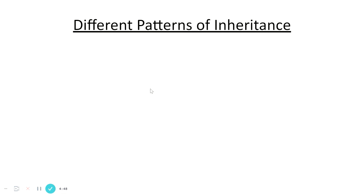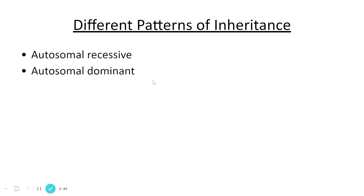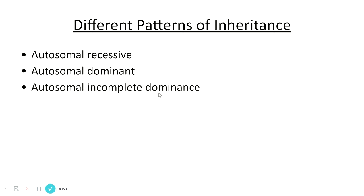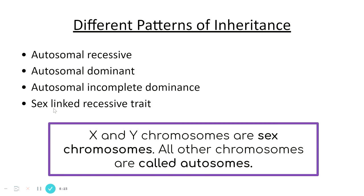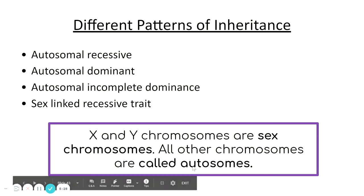There are different patterns of inheritance we need to know at Higher level: autosomal recessive, autosomal dominant — in both cases the condition is carried on one of the 22 autosomes — autosomal incomplete dominance, where one phenotype is not fully dominant over the other, and sex-linked recessive traits where the condition is controlled by a gene found on the sex chromosomes. X and Y are the sex chromosomes; all others are autosomes.